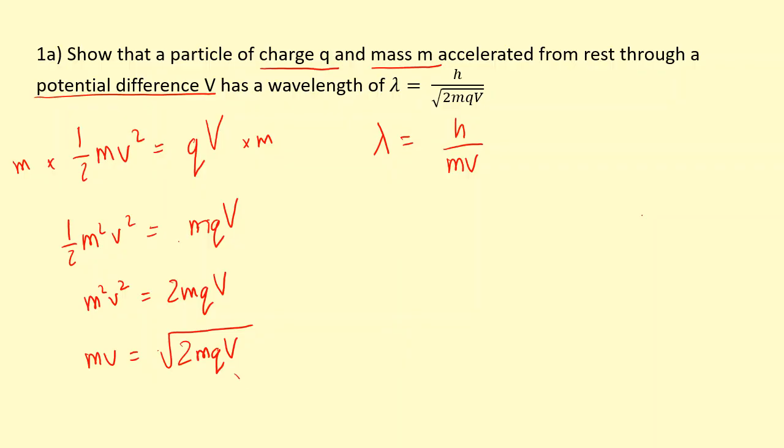So now we can bring this and put it there. So the wavelength of the particle lambda equals h over root 2mqV, which means the wavelength is inversely proportional to the root of the accelerating voltage.